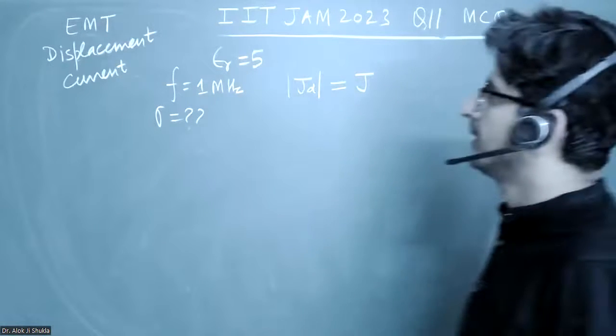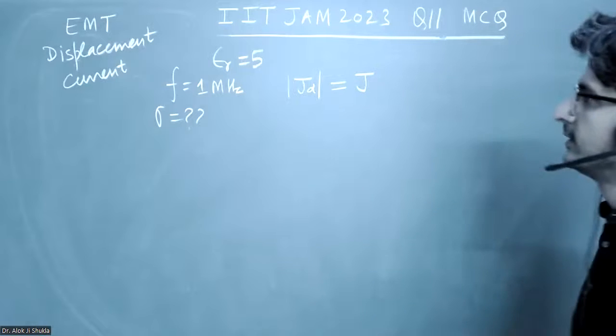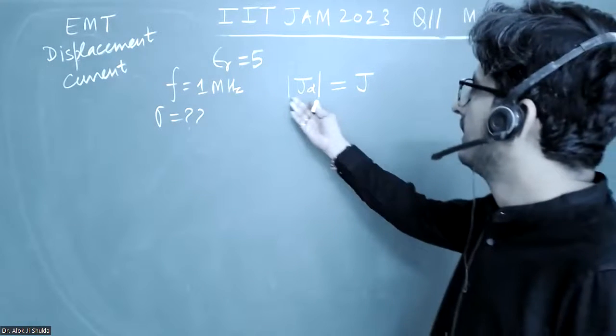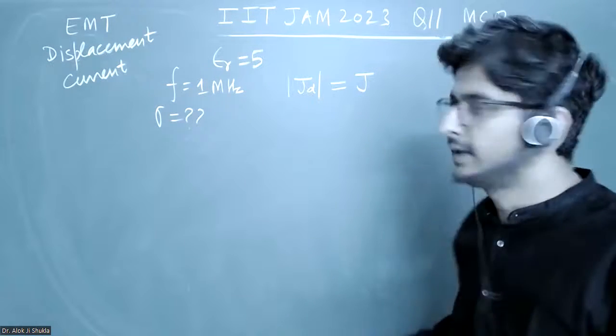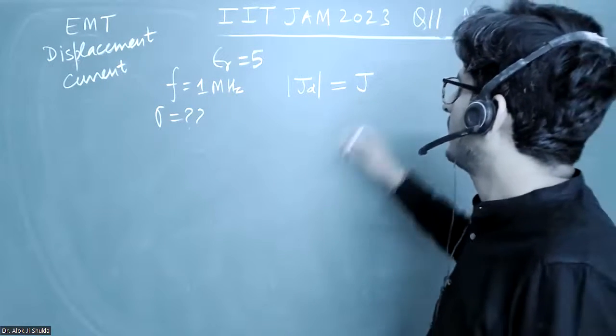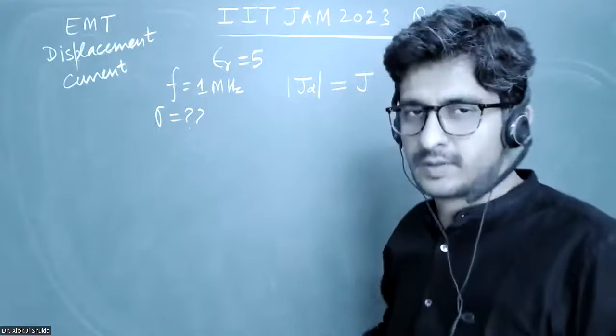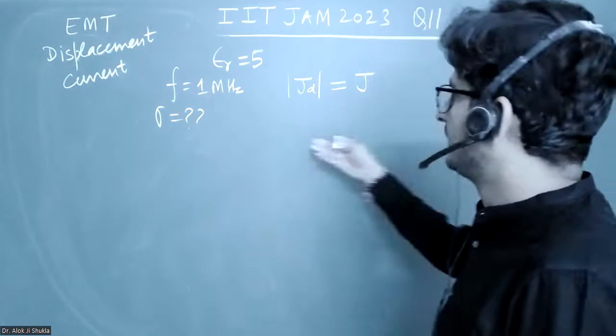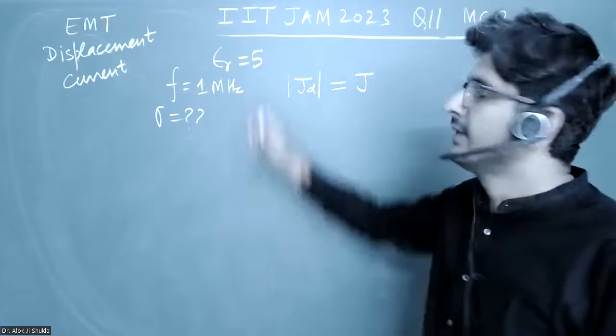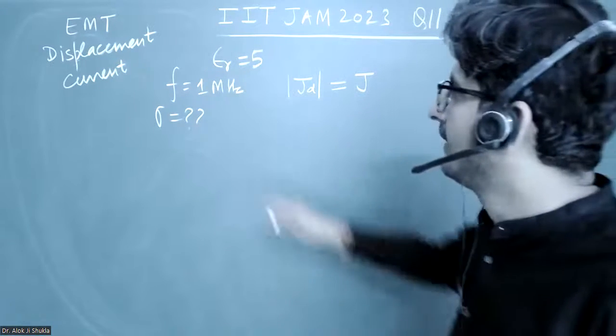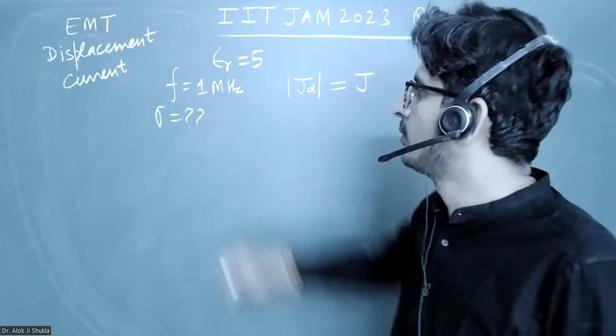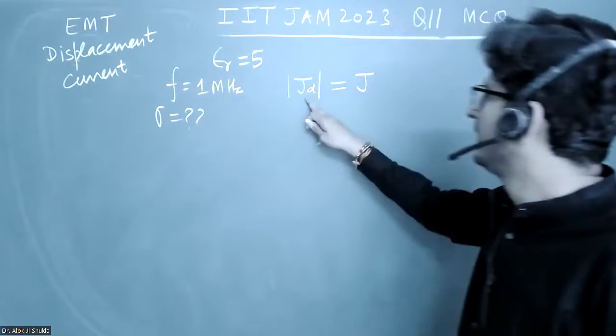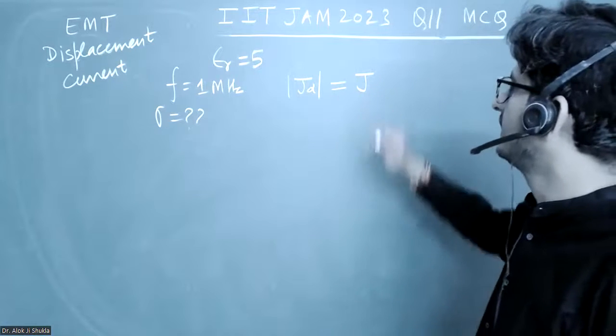This is a question from EMT based on displacement current, where the magnitude of displacement current is equal to the magnitude of current flowing in the circuit. In that medium, the relative permittivity is given to be 5 and the frequency is 1 megahertz. They have asked for the conductivity, so I have written |JD| equal to this.